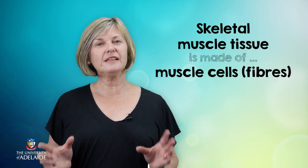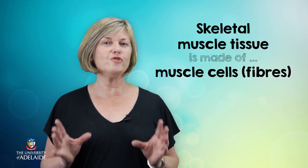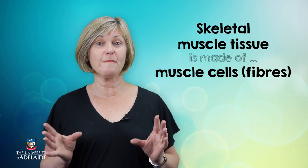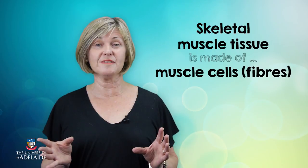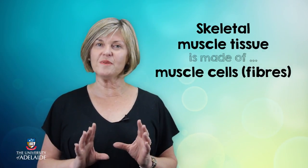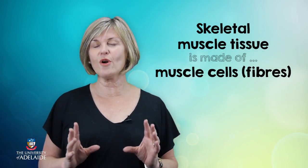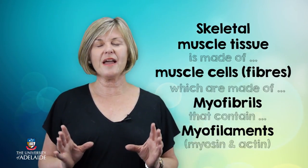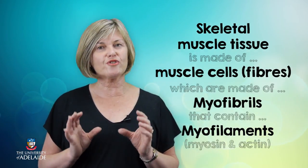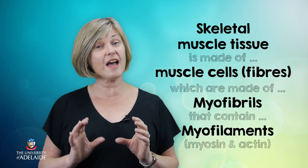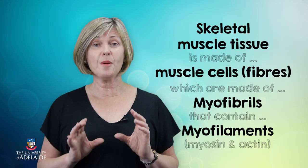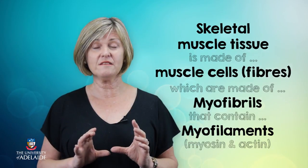As we've previously heard, skeletal muscle is made up of numerous elongated muscle cells that are often known as muscle fibers. These fibers, in turn, are comprised of many, many myofilaments that are made up of those contractile units called sarcomeres, where we find the special proteins myosin and actin.